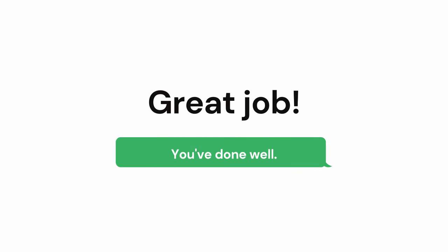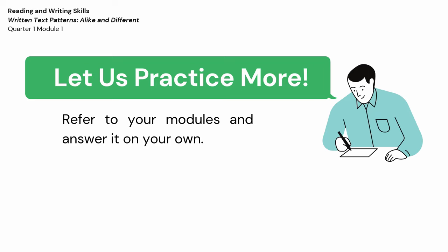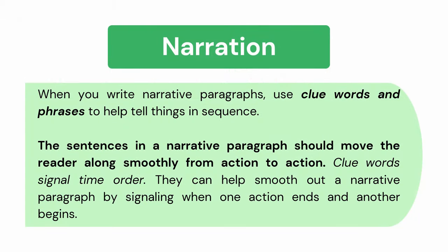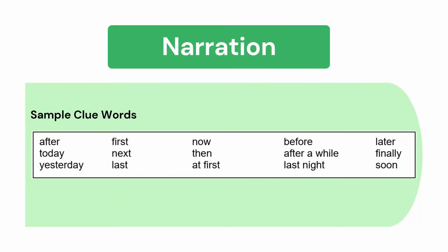Great job! You've done well! Let us practice more. Refer to your modules and answer on your own. Things you need to remember: When you write narrative paragraphs, use clue words and phrases to help tell things in sequence. The sentences in a narrative paragraph should move the reader along smoothly from action to action. Clue words signal time order. They can help smooth out a narrative paragraph by signaling when one action ends and another begins. Here are sample clue words for narration.